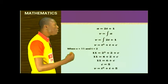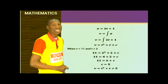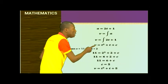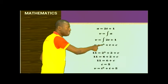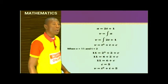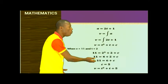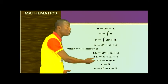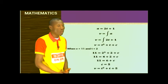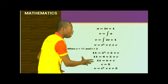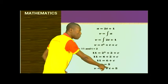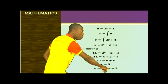Using V equals 11 when T equals 2: 11 equals 2² plus 2 plus C, so 11 equals 6 plus C, giving C equals 5. Therefore the velocity equation is V equals T squared plus T plus 5.